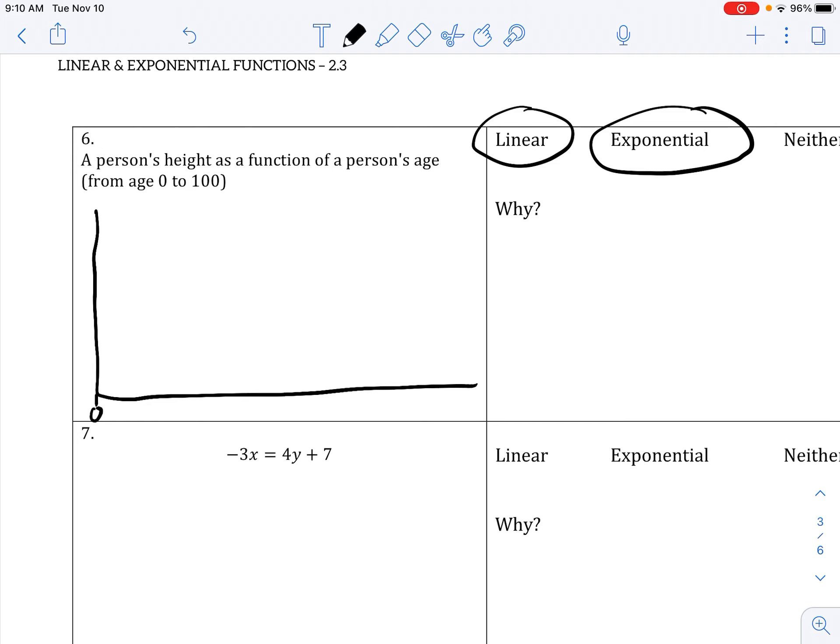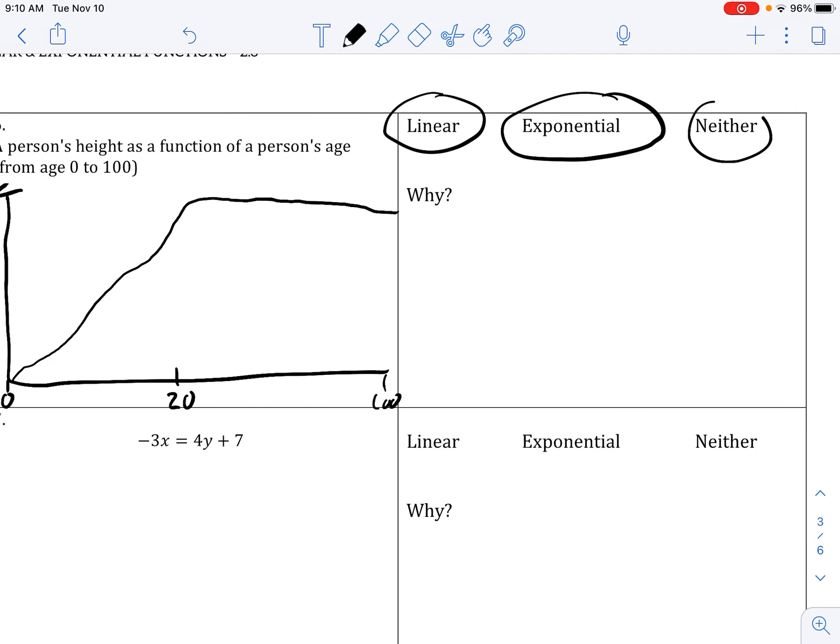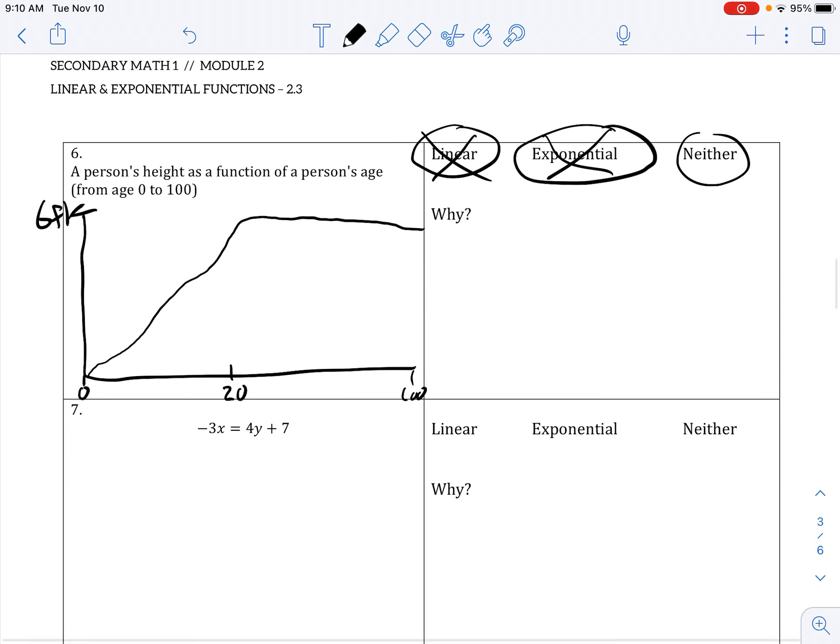So if you think about someone who's 0 years old and how high they might get, maybe they get 6 foot as they get to 100. In the beginning they're growing, and then they don't really grow at a certain point. Once people get to about 20 years old they don't really grow anymore, mostly. So obviously this is going to be neither because it's not straight, you're not exponential. All right.